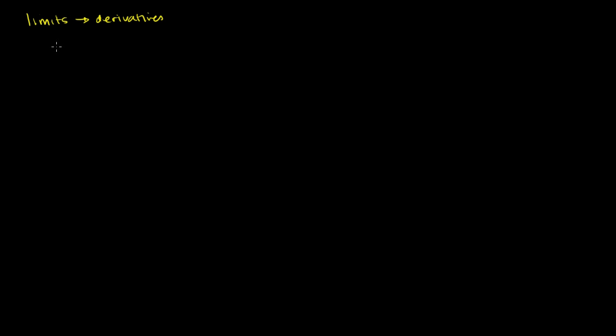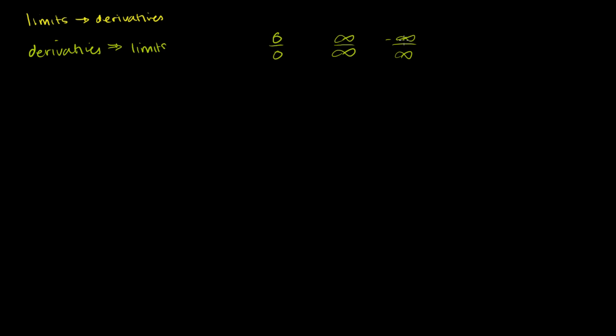You've seen that many times over. In this video, we're going to do it in the opposite direction — we're going to use derivatives to figure out limits, and in particular, limits that end up in indeterminate form. When I say indeterminate form, I mean that when we just take the limit as it is, we end up with something like 0 over 0, or infinity over infinity, or negative infinity over infinity, or positive infinity over negative infinity. All of these are indeterminate, undefined forms. And to do that, we're going to use L'Hôpital's Rule.